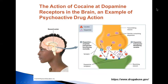Cocaine increases levels of the naturally occurring chemical messenger dopamine in brain circuits related to the control of movement and reward. Normally, dopamine recycles back into the cell that releases it, shutting off the signal between nerve cells. However, cocaine prevents dopamine from being recycled, causing large amounts to build up in the space between two nerve cells, stopping their normal communication.